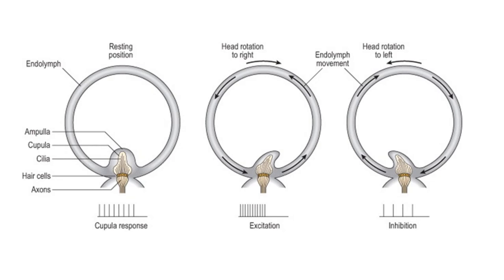All three semicircular canals — lateral, anterior, and posterior — are shaped like a ring. When there is fluid movement, it can move in either direction around the ring. If the fluid moves circularly, it will deflect the cupula. However, if I move up and down, this is not going to deflect it. Hence each canal is sensitive only in its own plane: the lateral canal is sensitive in the lateral plane, and the vertical canals are sensitive in the vertical planes only.